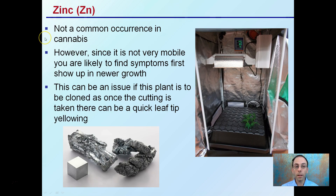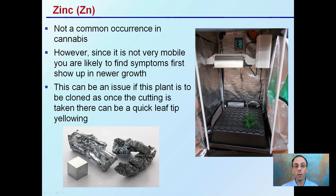The last micronutrient here is zinc. It's not a common occurrence in cannabis, but where it does occur it can be a major issue. It's not very mobile, so symptoms are likely to show up in newer growth since it doesn't translocate through the plant very well. Because of this, it can be an issue if you're cloning a plant — since the cutting is taken towards the tip, the zinc may have a hard time getting there. If you take recent clones and they all turn yellow fairly quickly, you could be zinc deficient in the mother plant. If you're feeding mother plants, make sure they're healthy, and if zinc is an issue in the media, keep this in mind especially when cloning, so the cutting maintains a nice green coloration to absorb light and produce quality roots.